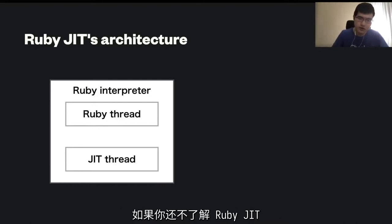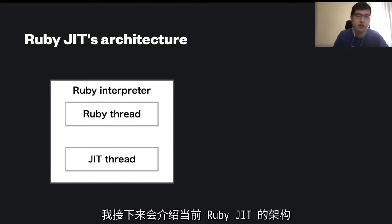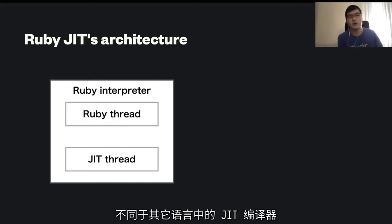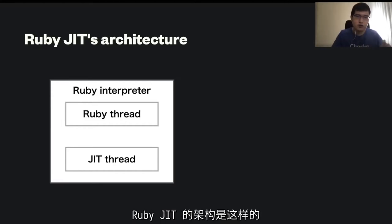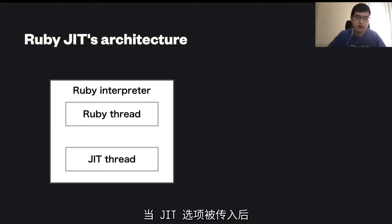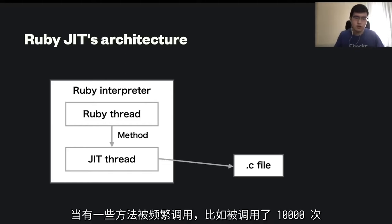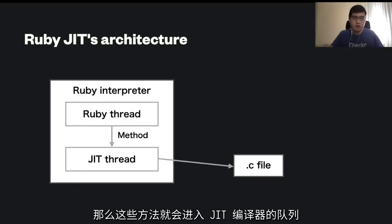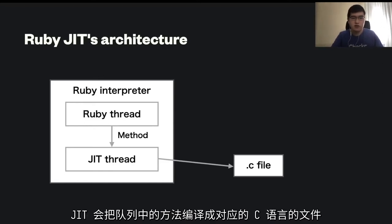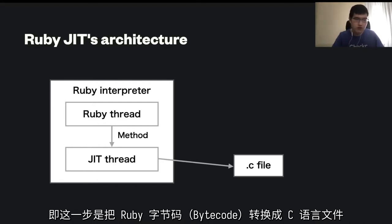For anybody who doesn't know yet, I'm going to talk about the current Ruby JIT's architecture. Unlike other JIT compilers existing in the world, the architecture is like this. Ruby interpreter has a Ruby thread, and with JIT compiler enabled by passing the --jit option, there is also a JIT compiler thread. Once there's a hot method — called 10,000 times or something — those hot methods are enqueued to the JIT compiler thread, and JIT compiler generates a C source code file by compiling the method implementation, which is called bytecode, to a .c file.